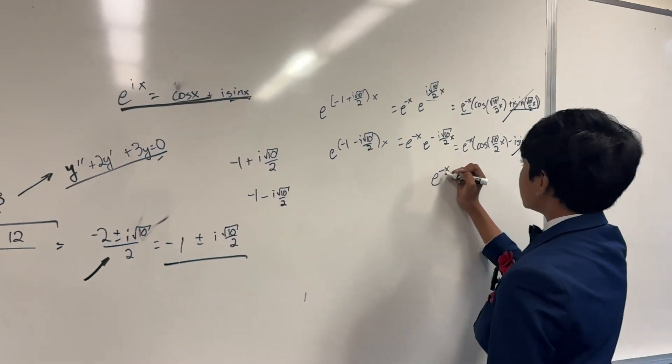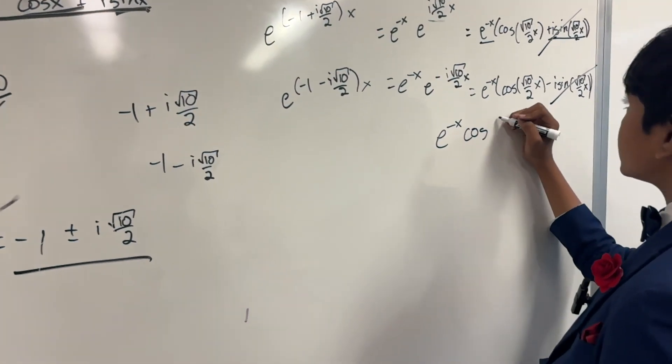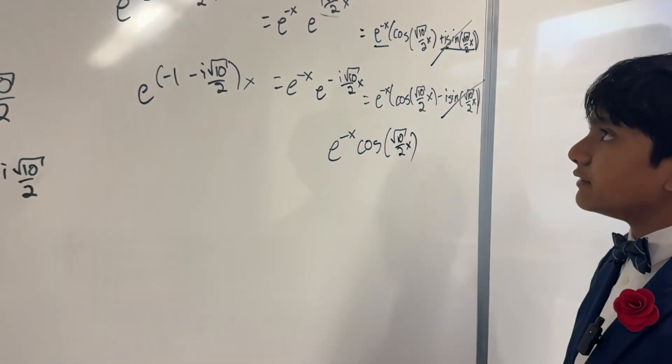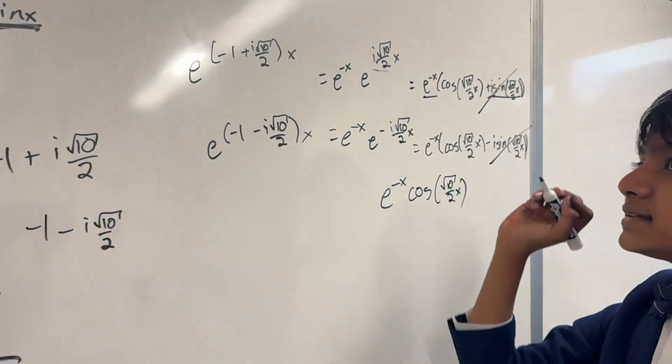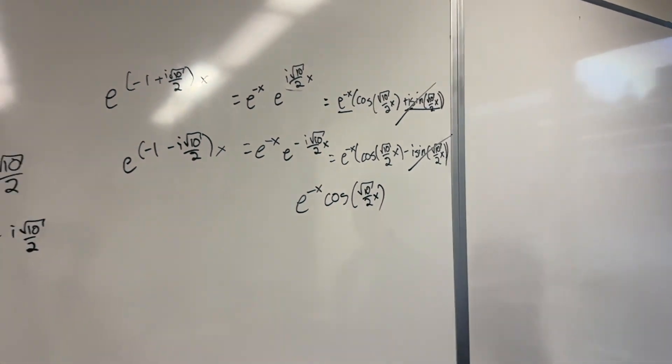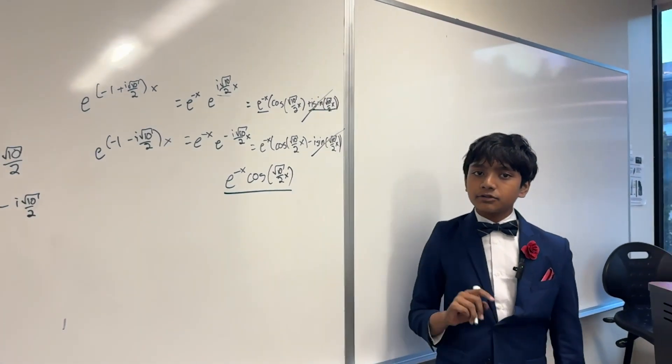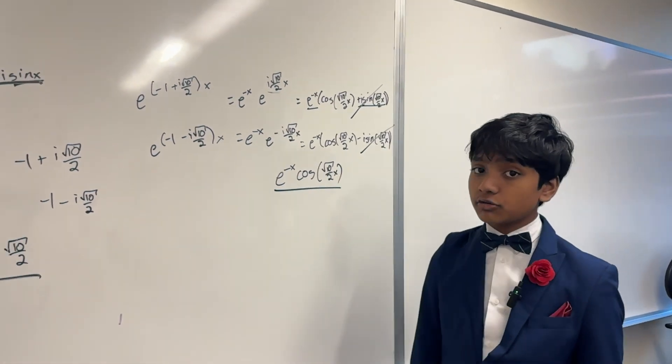So then our solution is e to the minus x cosine root 10 over 2 x. It doesn't even depend on the plus or minus sign because cosine is an even function. So this is our only solution to that differential equation.